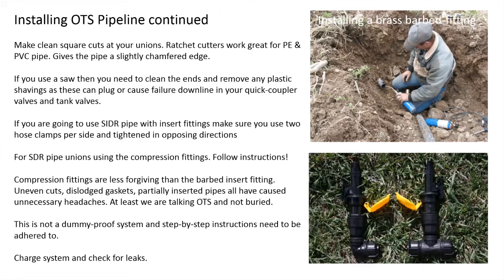Installing over-the-surface pipeline continued: make a square cut. For smaller pipes, ratchet cutters are pretty handy — they create a chamfered edge, don't produce a lot of burrs, and don't create shredded pipe waste inside the pipe, which can create failure in your quick couplers and valves.